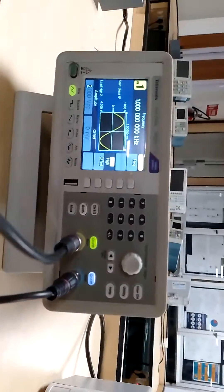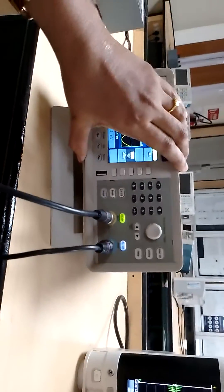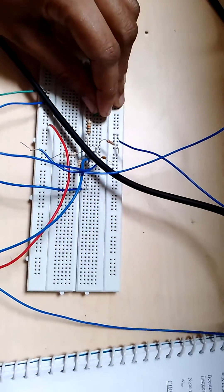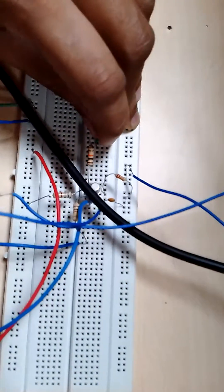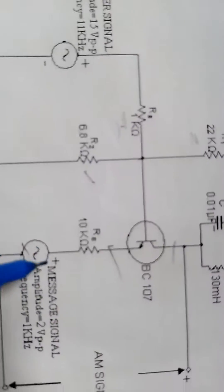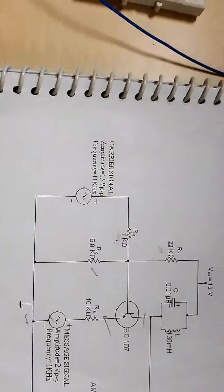We are going to connect the input message signal from the function generator. The positive input is fed to the 10 kilo ohms resistance - the message signal is given to the 10 kilo ohms resistance connected at the emitter terminal, and the negative is grounded.